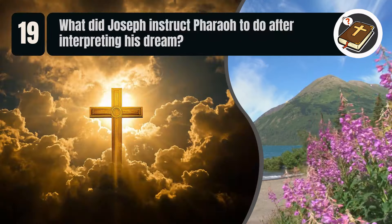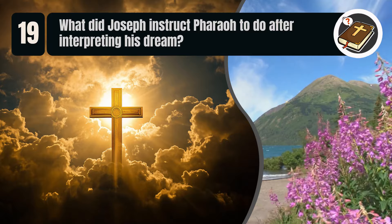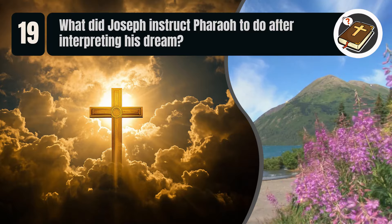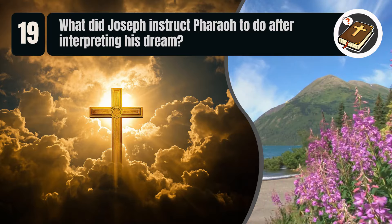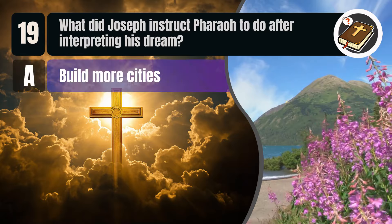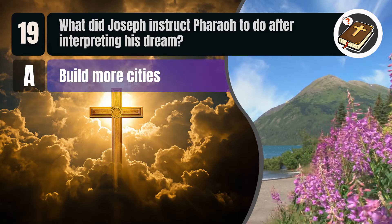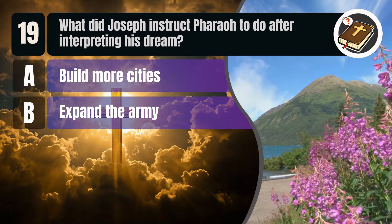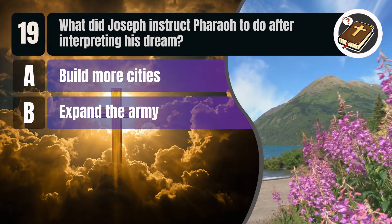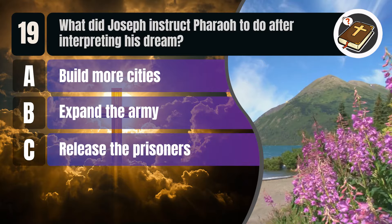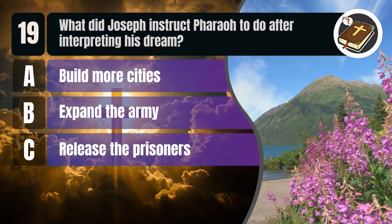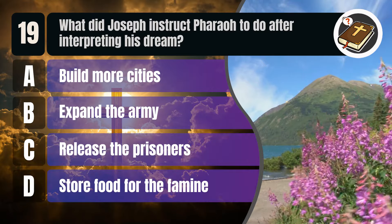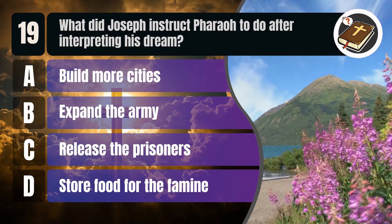Question 19. What did Joseph instruct Pharaoh to do after interpreting his dream? A. Build more cities. B. Expand the army. C. Release the prisoners. D. Store food for the famine.